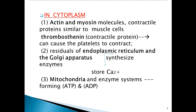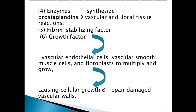In the cytoplasm of platelets there are actin and myosin molecules — contractile proteins similar to muscle cells — as well as thrombosthenin, also a contractile protein, which can cause platelets to contract. There are residuals of endoplasmic reticulum and the Golgi apparatus, with synthesis of enzymes and storage of calcium, while mitochondria and enzyme systems form ATP and ADP. There is also synthesis of prostaglandins.